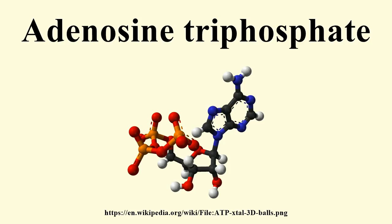ATP is highly soluble in water and is quite stable in solutions between pH 6.8 and 7.4, but is rapidly hydrolyzed at extreme pH. Consequently, ATP is best stored as an anhydrous salt. ATP is an unstable molecule in unbuffered water, in which it hydrolyzes to ADP and phosphate. This is because the strength of the bonds between the phosphate groups in ATP is less than the strength of the hydrogen bonds between its products and water. Thus, if ATP and ADP are in chemical equilibrium in water, almost all of the ATP will eventually be converted to ADP.